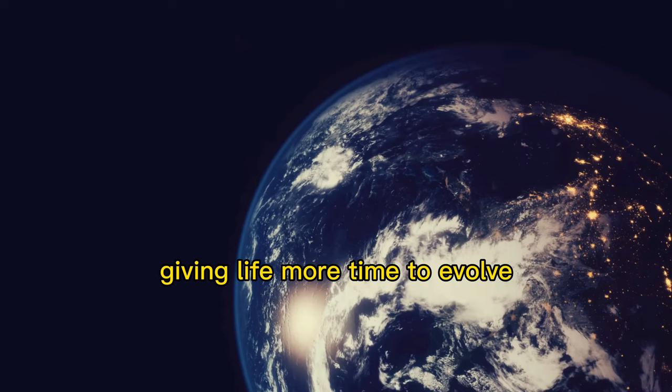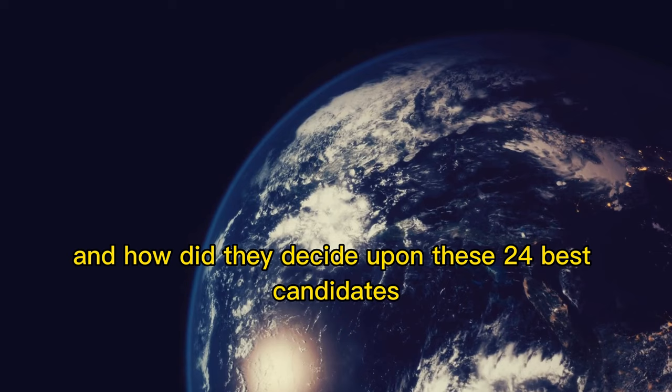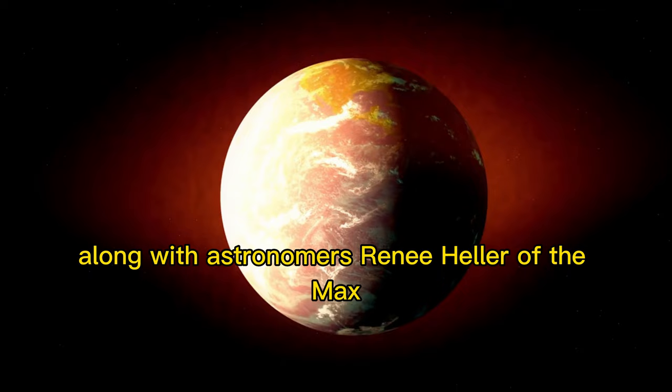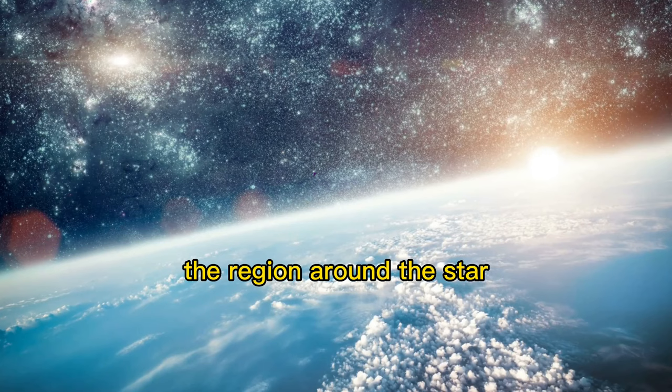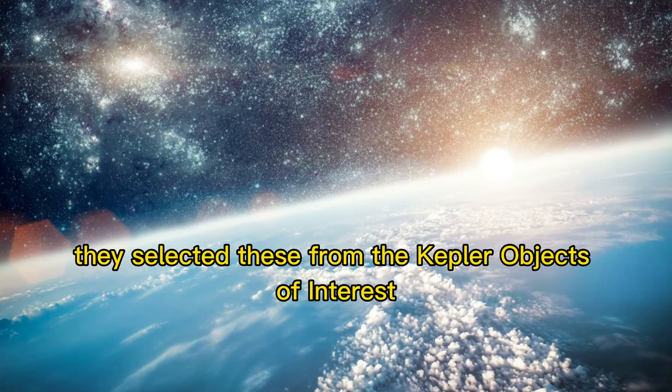So how did the researchers come to these conclusions, and how did they decide upon these 24 best candidates? Scholz-Makuch, along with astronomers René Heller and Edward Guinan, started with planet star systems where rocky terrestrial-type planets orbit within the habitable zone, the region around a star where temperatures could allow liquid water to exist. They selected these from the Kepler Objects of Interest Exoplanet Archive of Transiting Exoplanets.